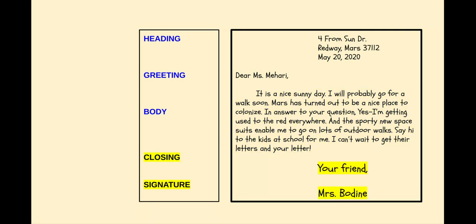The closing and the signature come next. The closing and the signature line up with the heading — do you see that? They're about lined up the same. 'Your friend' starts with a capital Y, there is a comma after 'friend,' and then a space and my signature right below that. So that's how you organize a friendly letter.